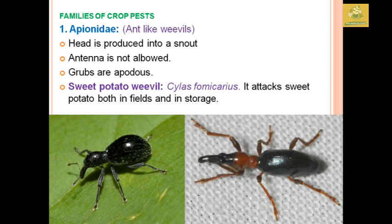The crop pest family Apionidae comprises weevils that look ant-like in structure. While they resemble ants, the head is produced into a stout rostrum-like structure and the antennae are geniculate. An example is the sweet potato weevil, Cylas formicarius, which attacks sweet potato both in the field and in storage.